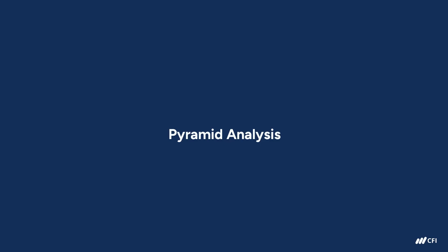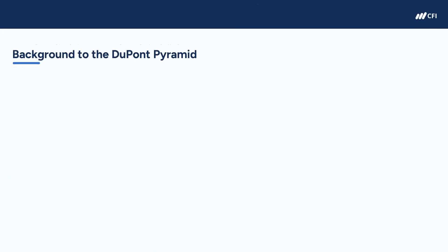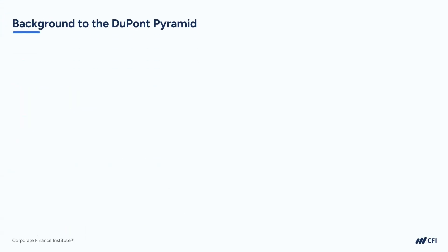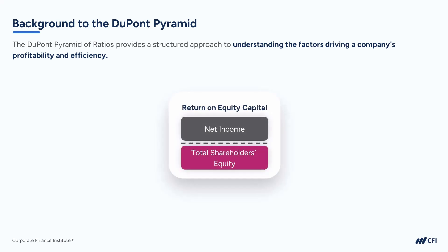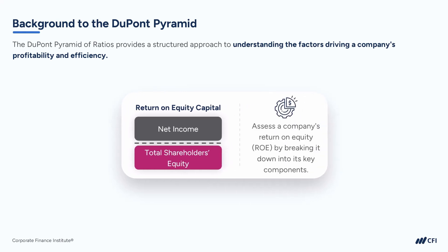Let's finish off the course by looking at the DuPont pyramid of ratios, also commonly referred to as the DuPont analysis. It's a financial analysis framework that was developed by the DuPont corporation way back in the 1920s. The analysis aims to assess a company's return on equity, or ROE, by breaking it down into its key components.